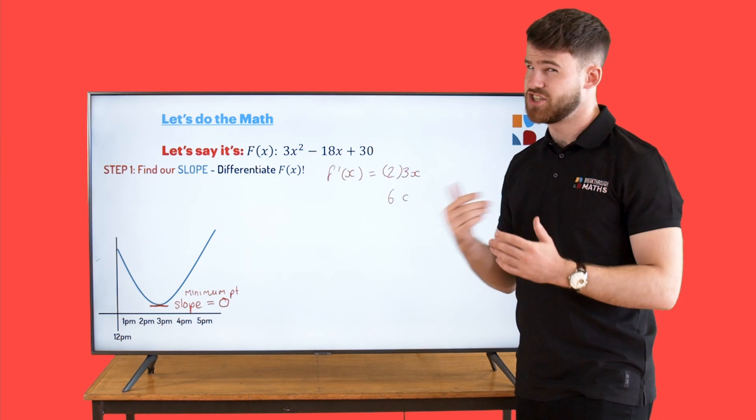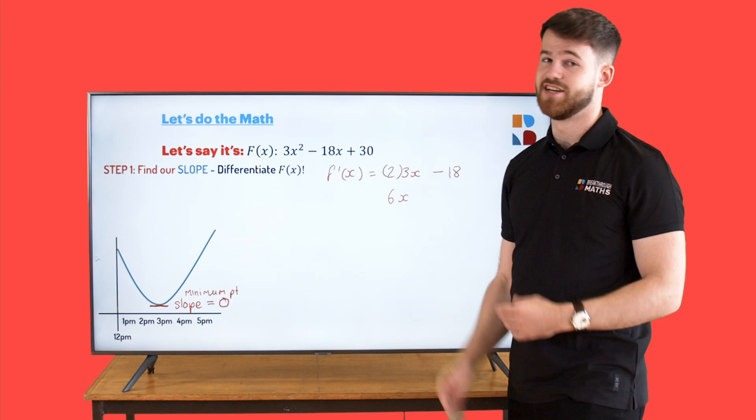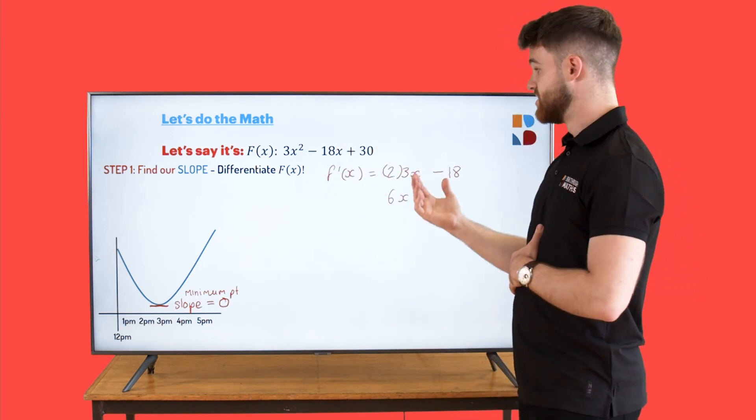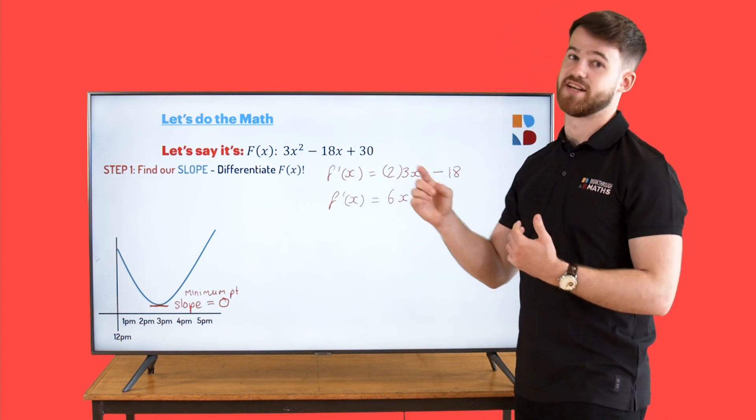Minus 18x, there's just an x there, so we can drop that and we'll be left with minus 18. And plus 30, it doesn't have an x, so we can just cut it out. So then the equation for GameStop's slope is going to be f'(x) = 6x - 18.